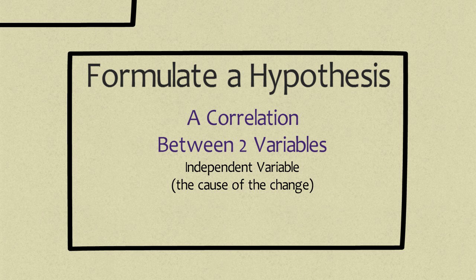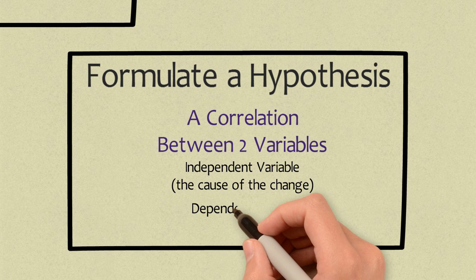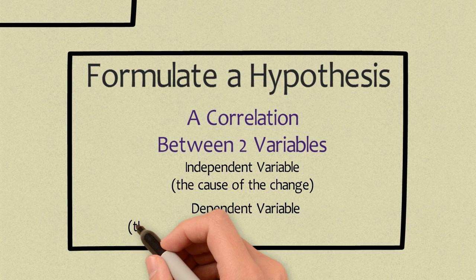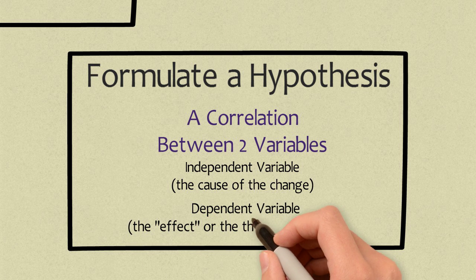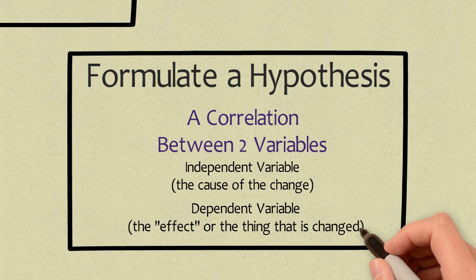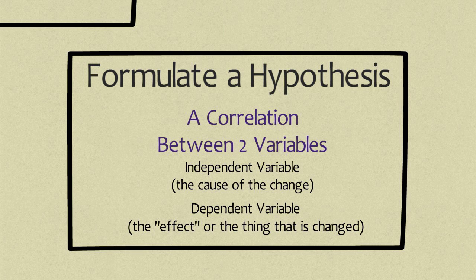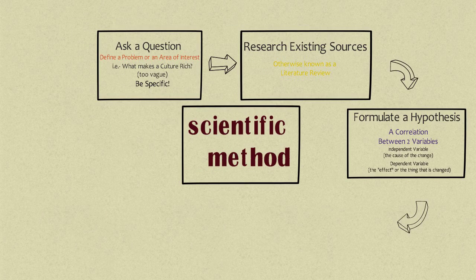The independent variable is the cause of the change. The dependent variable is the effect or the thing that has changed. In other words, the dependent variable depends on the independent variable for its results. If we are studying gender and want to know about how people in the workplace are treated based on identifying as male or female, identifying as male or female is the independent variable and how they are treated is the dependent variable.